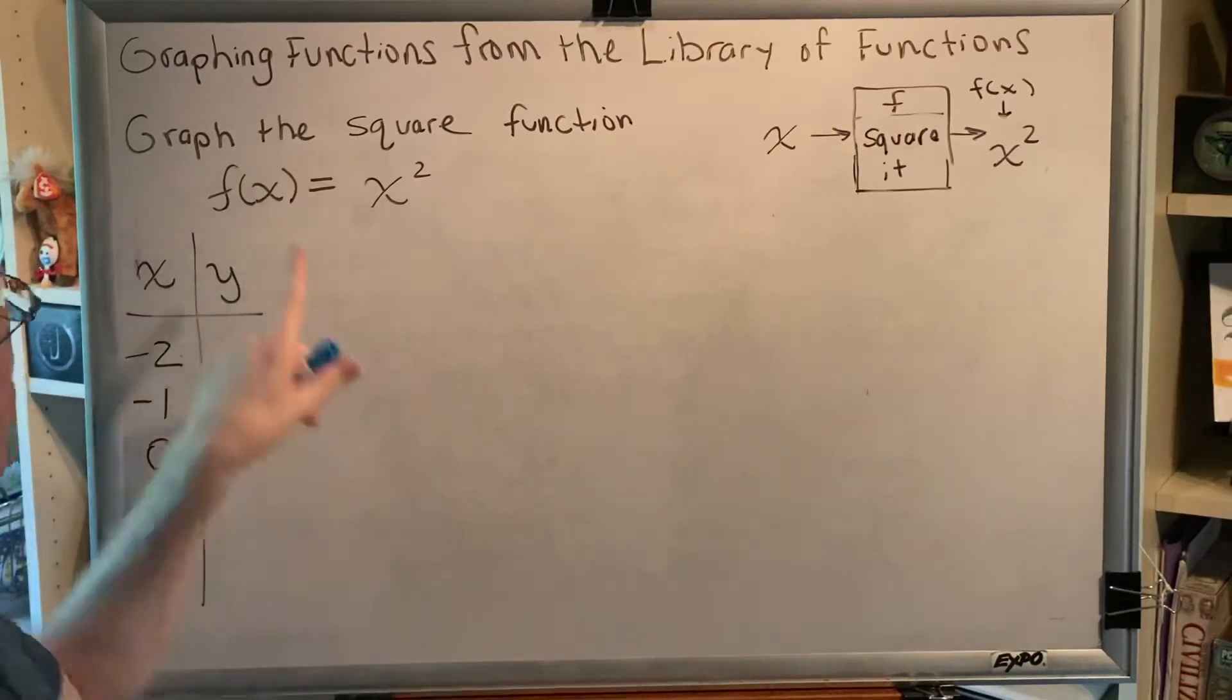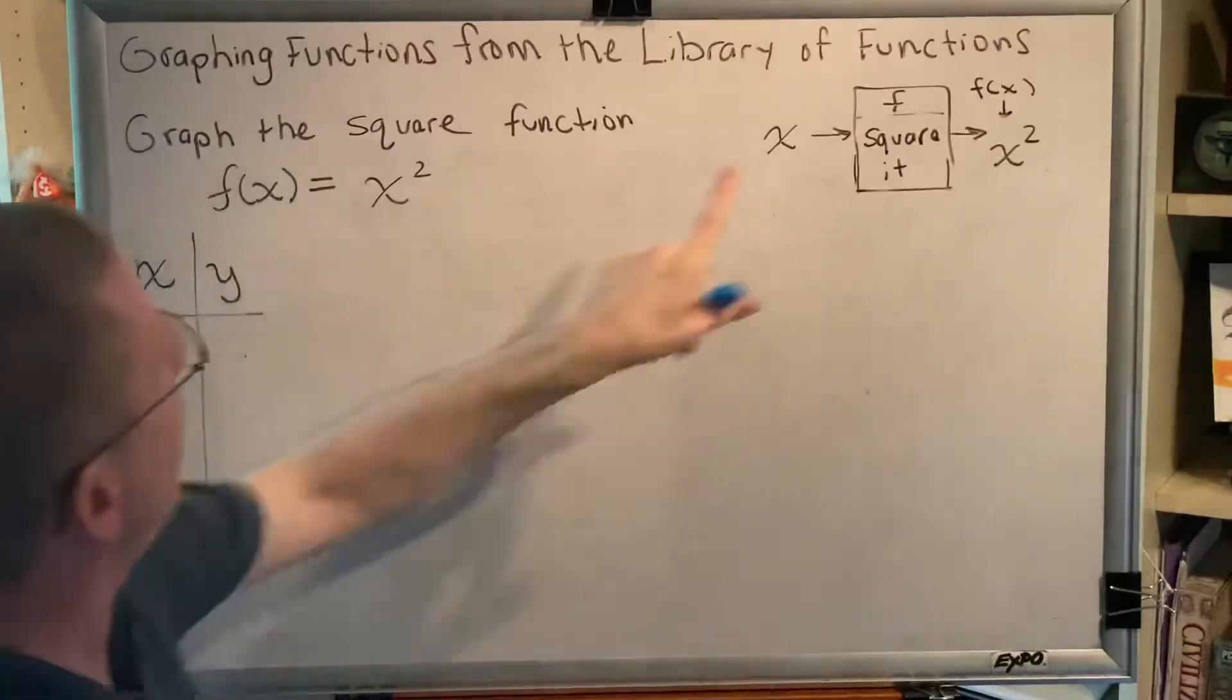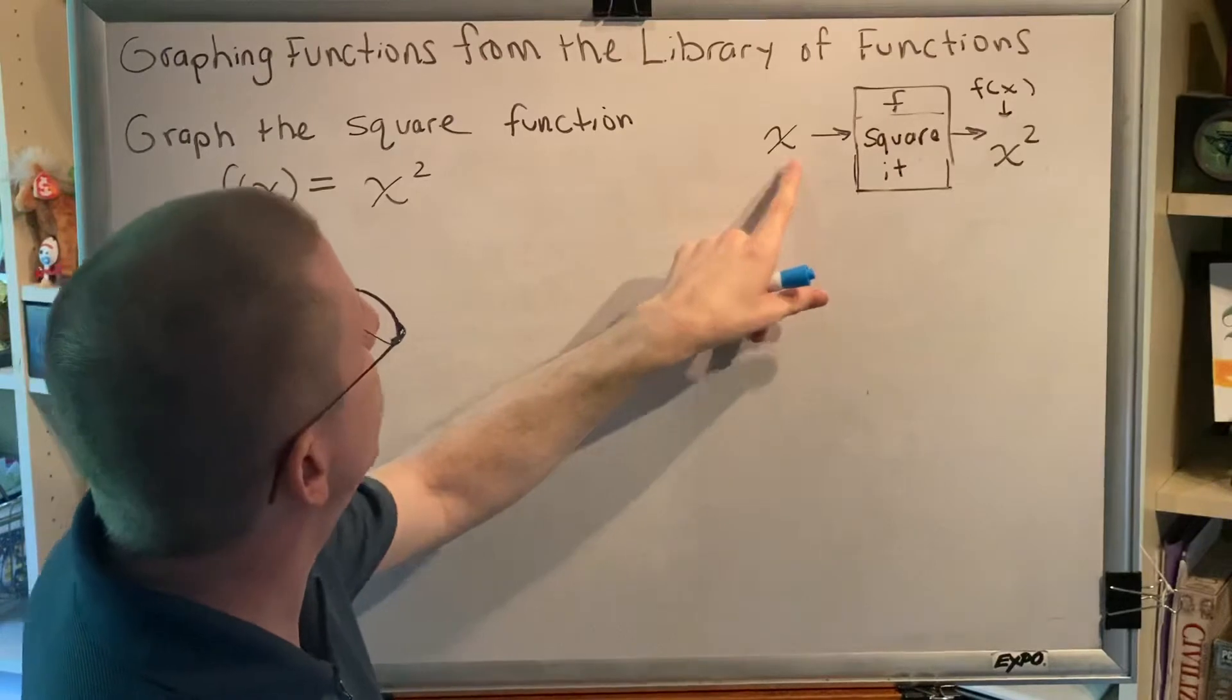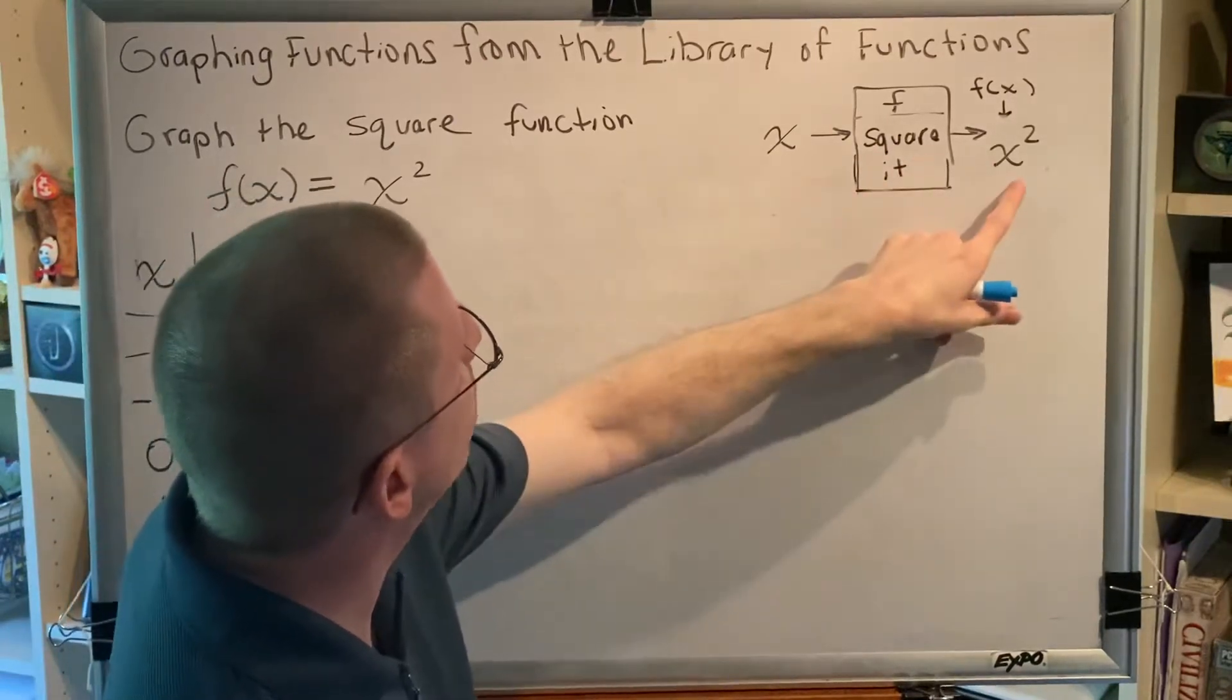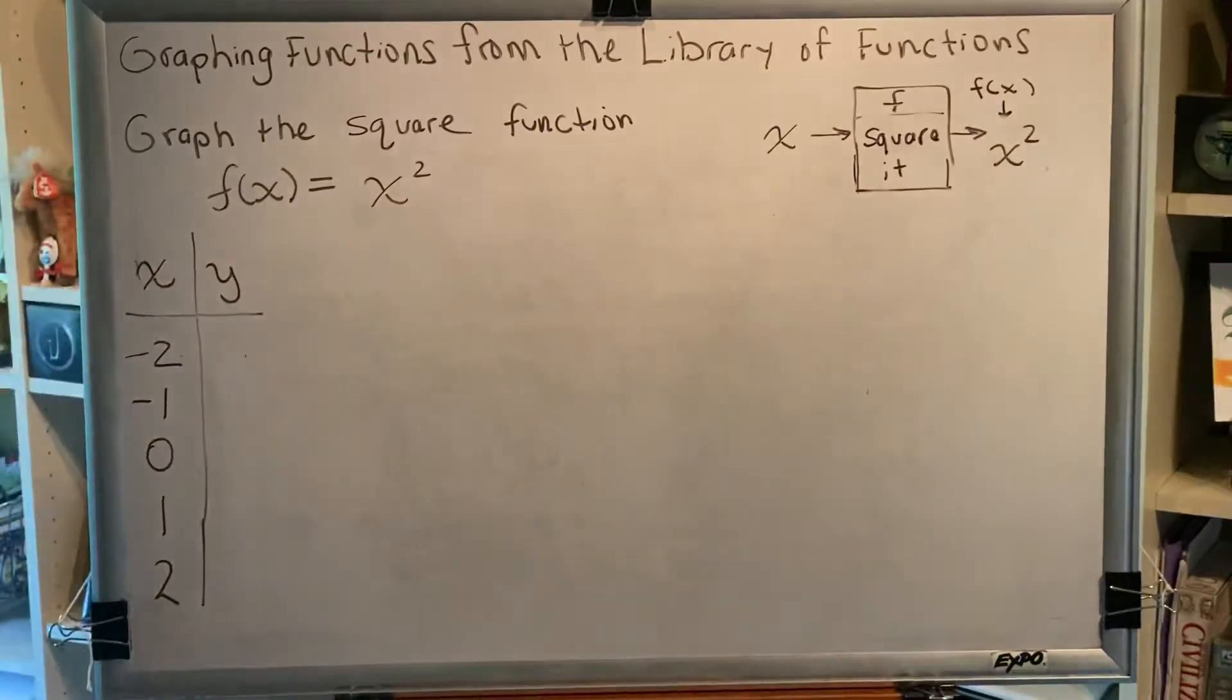Okay, let's look at the diagram. x is the original input. It's going into a machine named f, and the instructions from machine f say square it. So, x comes in, you square it, so what comes out is x squared.